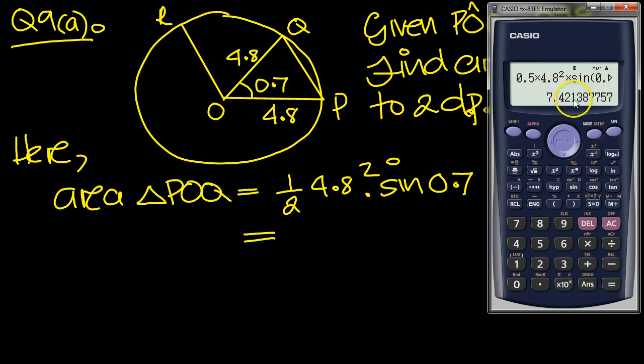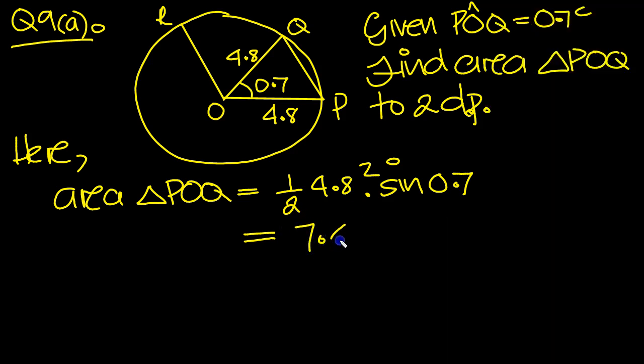7.42 to 2 decimal places, 7.42. And that's units squared, isn't it? So it's centimeters squared.